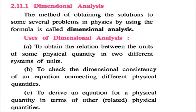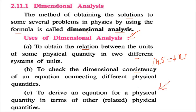Now comes dimensional analysis. The method of obtaining solutions to problems in physics using dimensional formulas is called dimensional analysis. Its uses include: obtaining the relation between units of a physical quantity in two different systems (like MKS and CGS), checking dimensional consistency of equations, and deriving equations for physical quantities in terms of related quantities.